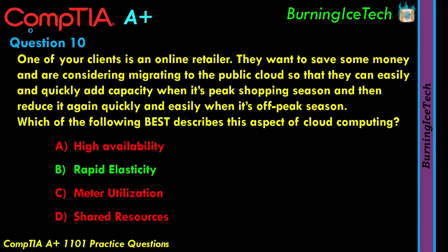Answer C: metered utilization — that's the concept of only paying for what you use. If you've got a virtual machine in the cloud and you turn it off, you're not paying for it. Answer D: shared resources — also known as resource pooling. When you put something in the cloud, it's generally on a server in a data center that you're sharing with other companies. For example, on server seven in Microsoft's data center there might be ten other companies with virtual machines on that exact same server. Security there is top-notch, but if you're paranoid and willing to pay more, you can get a dedicated server.